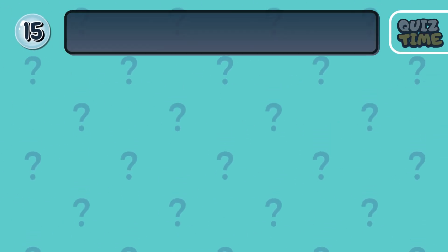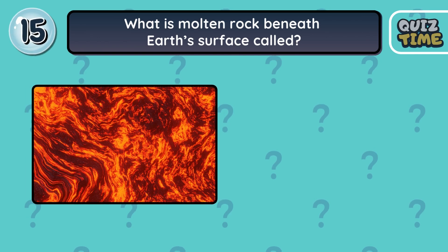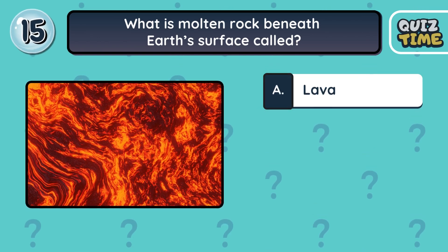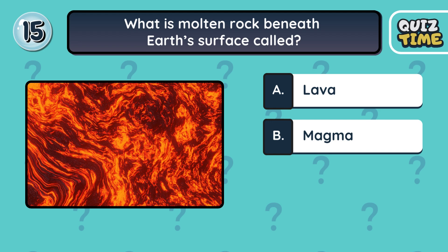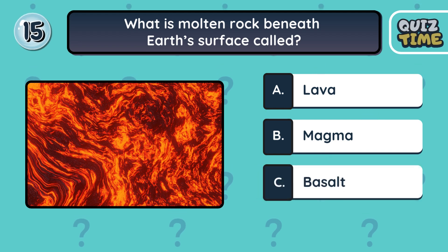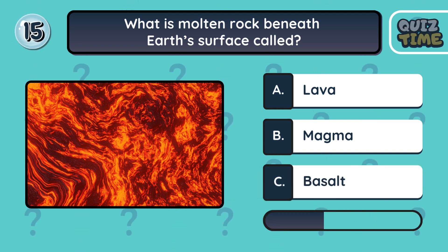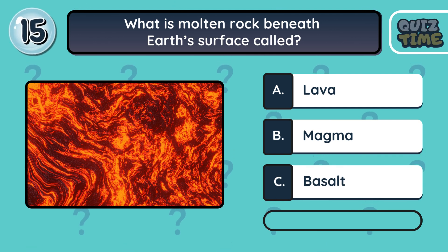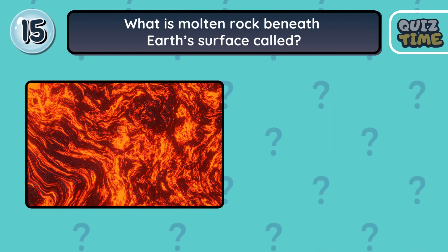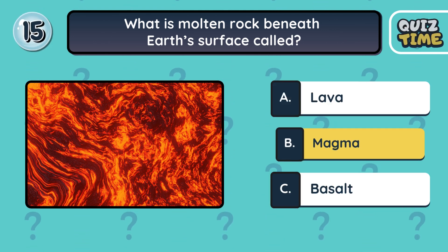Number 15. What is molten rock beneath Earth's surface called? A. Lava. B. Magma. C. Basalt. The correct answer is B. Magma.